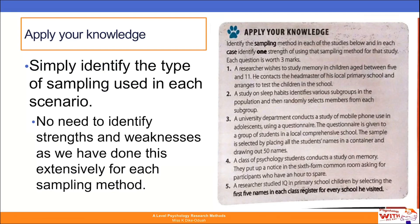To wrap things up, I want you to apply your knowledge of the different sampling methods used in psychology. Simply identify the method used in each scenario — you do not need to outline the strengths and weaknesses as we've already covered those in detail. Looking at number one together: a researcher wishes to study memory in children aged between five and 11, contacts the headmaster of his local primary school, and arranges to test the children there. This is opportunity sampling — his local primary school means participants are readily available.